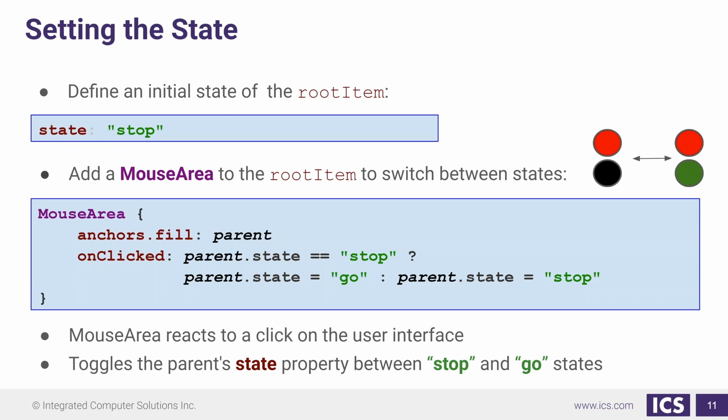We're just going to add a mouse area. Our mouse area is going to fill the parent, which is going to be the root item here. And on clicked, we're just going to see if the state is stopped, we'll change it to go. Otherwise, we're going to change the state to stop.